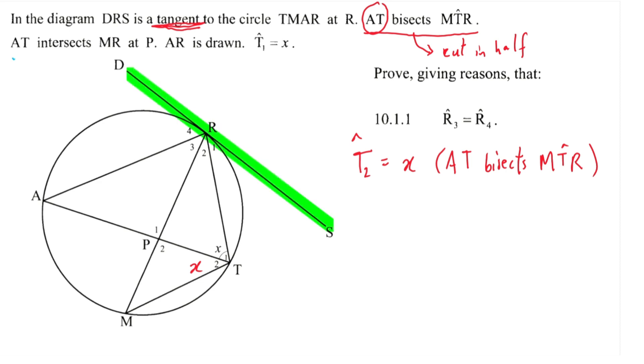Now let's highlight a triangle that touches this tangent in order to use tan chord theorem. Triangle ART seems very useful, so let's highlight ART.